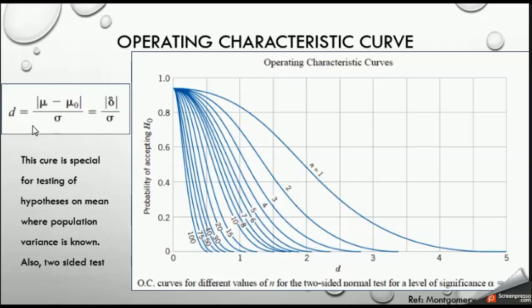This equation tells us how many sigmas the real mean is from the hypothesized mean. Mu is the real mean and mu-naught is the hypothesized mean — this is their difference expressed in units of sigma. On the y-axis we have the probability to accept H-naught when H-naught is false, which is beta.